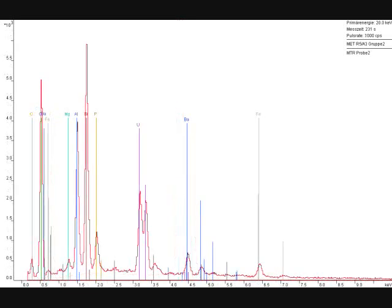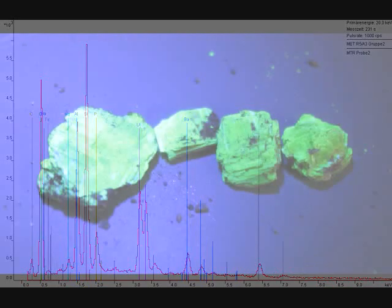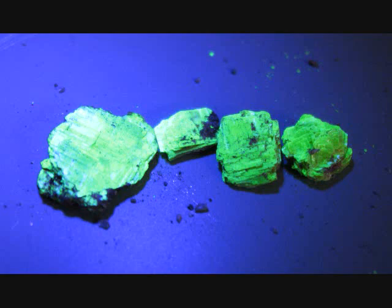I also had some of my nice green fluorescent uranium minerals analyzed. And what you can see here in the middle to the right is a peak of barium. So while it was sort of unclear whether I had autunite or uranocircite before, this clearly tells us that I actually found uranocircite. As a reminder, here is a photo of the minerals I found under UV light, so you can see the fluorescence.